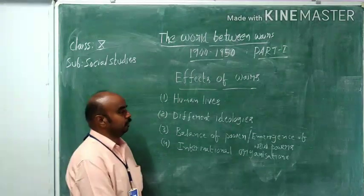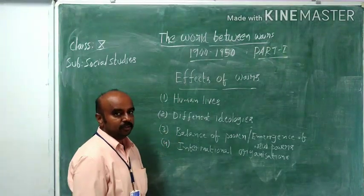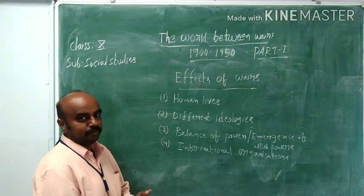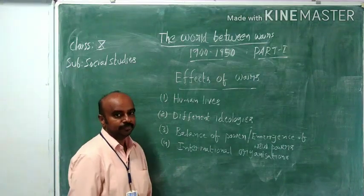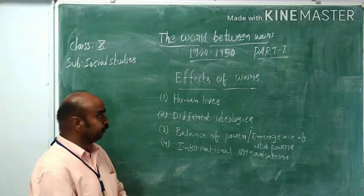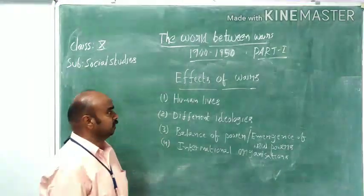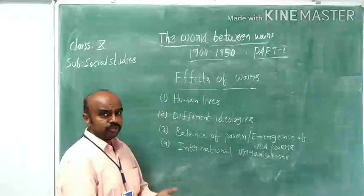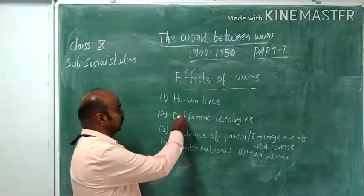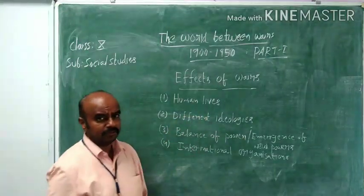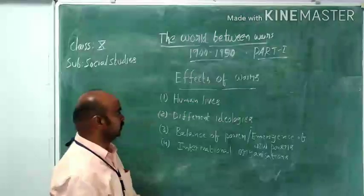Now in this topic we are going to cover the effects of the wars — what kinds of aftermath effects took place after the completion of World War I and World War II. These are segregated as political effects, social effects, and economic effects. Let us see what these political, social, and economic effects are in detail.